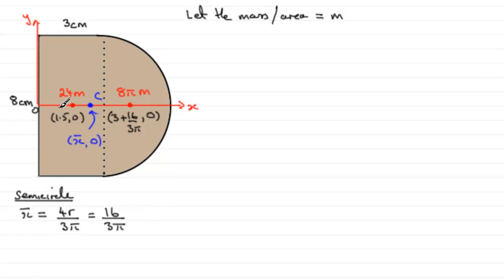Now in the usual way, we're going to take moments about the x axis and the y axis. So we have the total mass, which is going to be 24m plus 8πm. I'm going to factorize that and pull out m as a common factor. So we could have (24 + 8π)m. So when we do our equation for the moments, we've got the total mass, which is (24 + 8π)m, multiplied by x bar, 0.